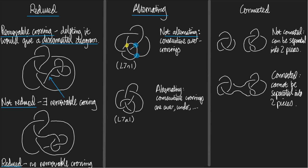And here are two consecutive under-crossings, because as we travel around the diagram it goes underneath both times. So this is not an alternating diagram. Whereas the next one is alternating — you just start somewhere on the link and travel around checking that you go over, under, always alternating. Starting here: under, over, under, over, under, over, under. And starting on the other component: over, under, over, under. So that's what it means for a diagram to be alternating.